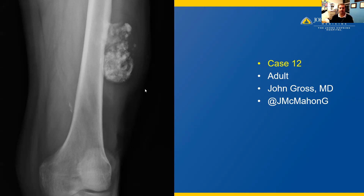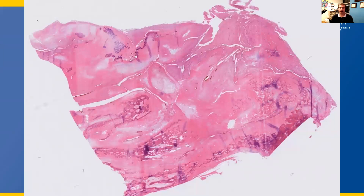The specimen was resected and here we have a very low power photomicrograph showing a chondroosseous proliferation with various areas of well-formed bones, as well as other areas of nodules of hyaline cartilage and lots of fibroblastic areas seen as pink, variably cellular regions from this low power view.